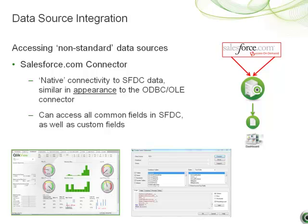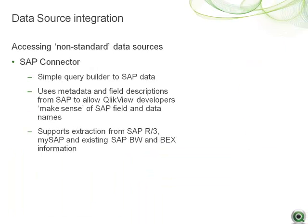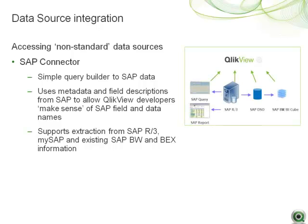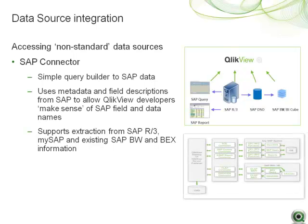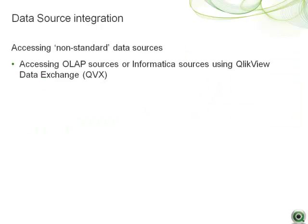The ClickView SAP connector greatly simplifies the process of extracting data from SAP warehouses. It includes a simple query builder and can use the metadata and field descriptions from SAP to allow users to choose fields with meaningful names, allowing users to rapidly extract and understand SAP data in ClickView. In addition to importing SAP data, ClickView can also import the user roles and permissions data from SAP to ensure user access in ClickView mirrors that of SAP, ensuring users see only the data they are permitted to see. SAP data from a BW cube and R3 can be extracted via the SAP connector.